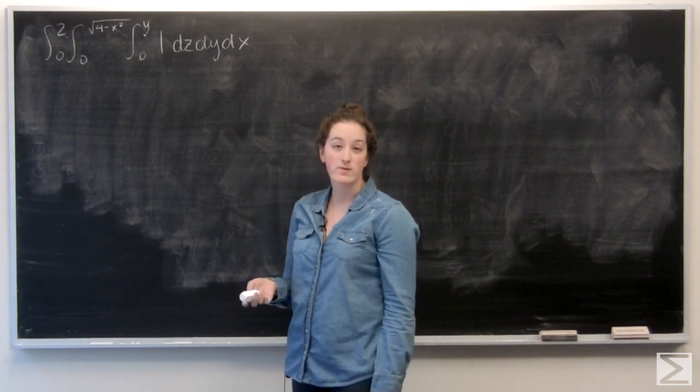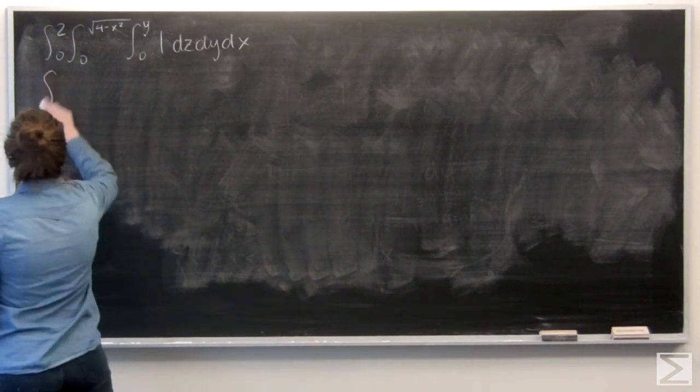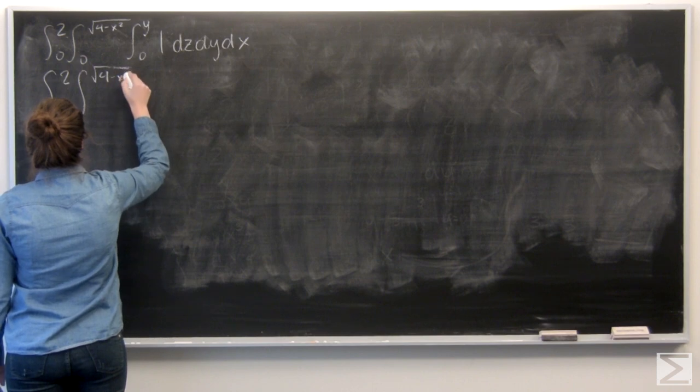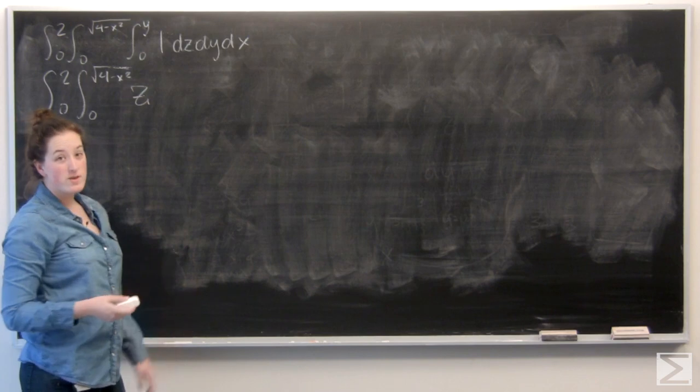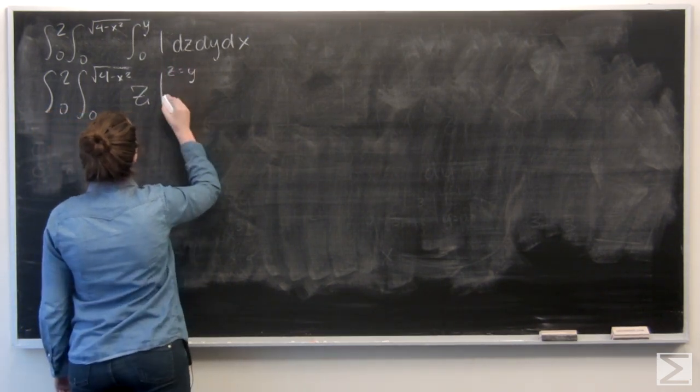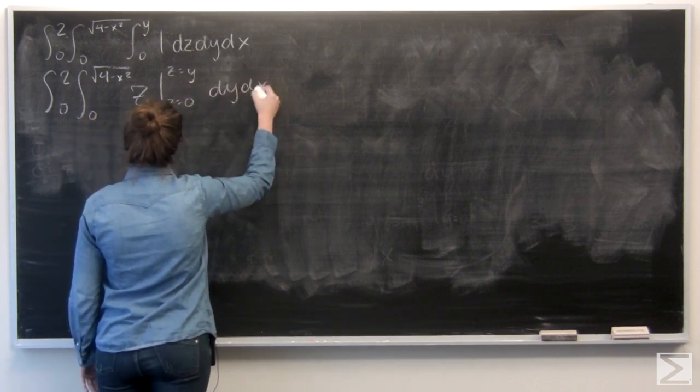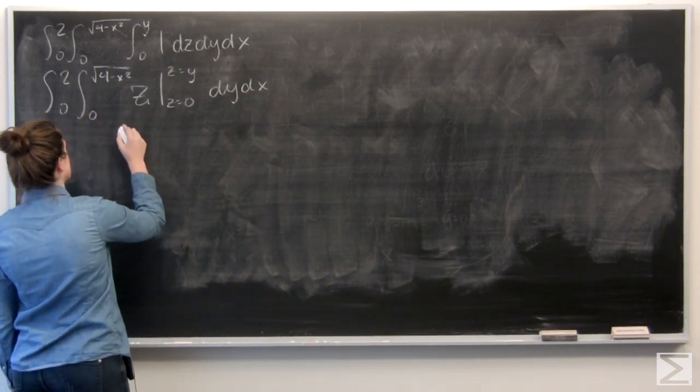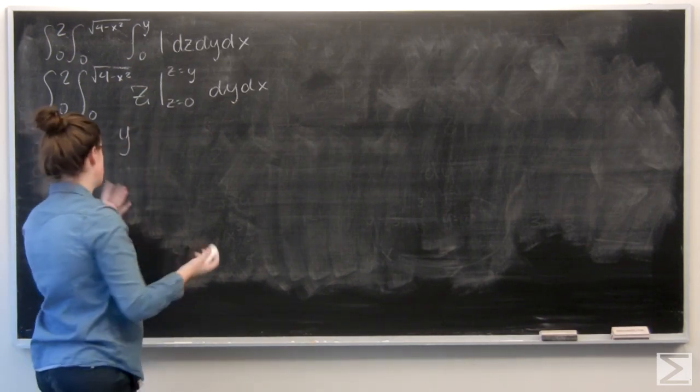So, go ahead and start by integrating with respect to z. I just got a 1, so that's going to be z. And I'm evaluating z from 0 to y. So first I'm going to plug in a y for z, which is just y. And then minus 0, so y is all I've got.